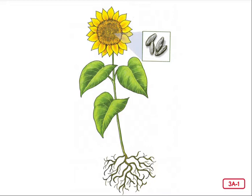Our third word is sapling. A sapling is a young tree. Every day I check the sapling we planted to see how much it has grown — it's just a small tree. Our fourth word is seedlings. Those are the baby plants that have grown from a seed. For example, at the apple orchard, we saw many seedlings that will one day grow into apple trees. So the seedling is that small baby plant.